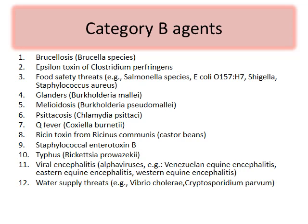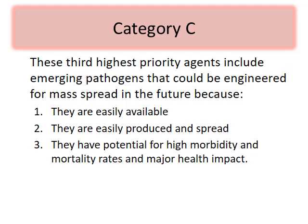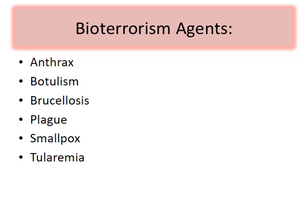Category B agents are moderately concerning and include brucellosis, epsilon toxin of Clostridium perfringens, Salmonella, glanders, melioidosis, psittacosis, Q fever, ricin toxin, staphylococcal enterotoxin B, typhus, viral encephalitis, and water supply threats like Vibrio cholerae and Cryptosporidium. Category C includes emerging pathogens not yet categorized into A or B. These lists change depending on what state or country is being discussed.